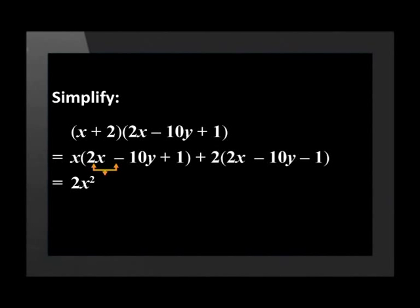We don't need to show this calculation step, but it makes it easier to get the right answer. x times 2x is 2x². x times -10y is -10xy. x times 1 is +x.